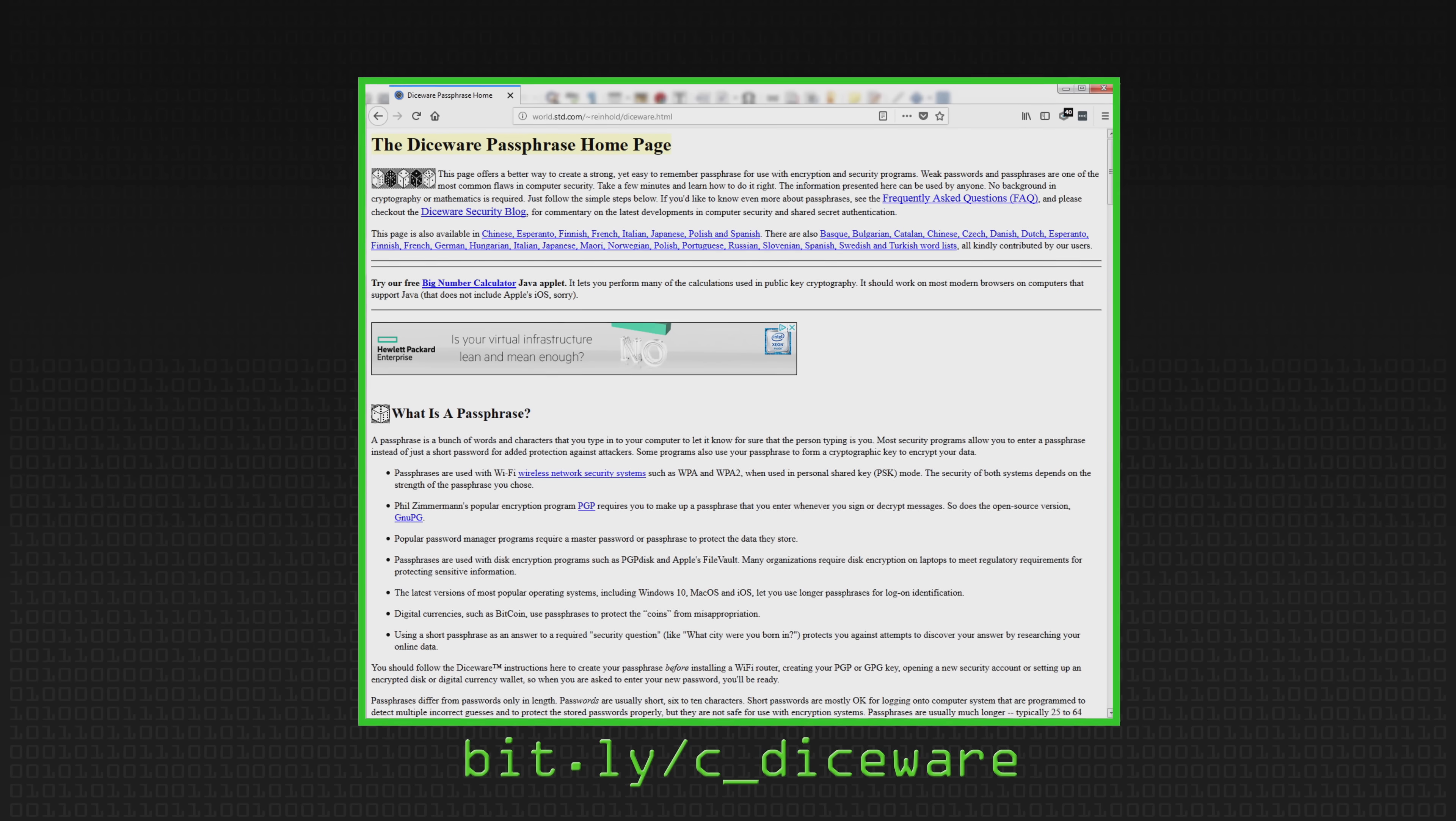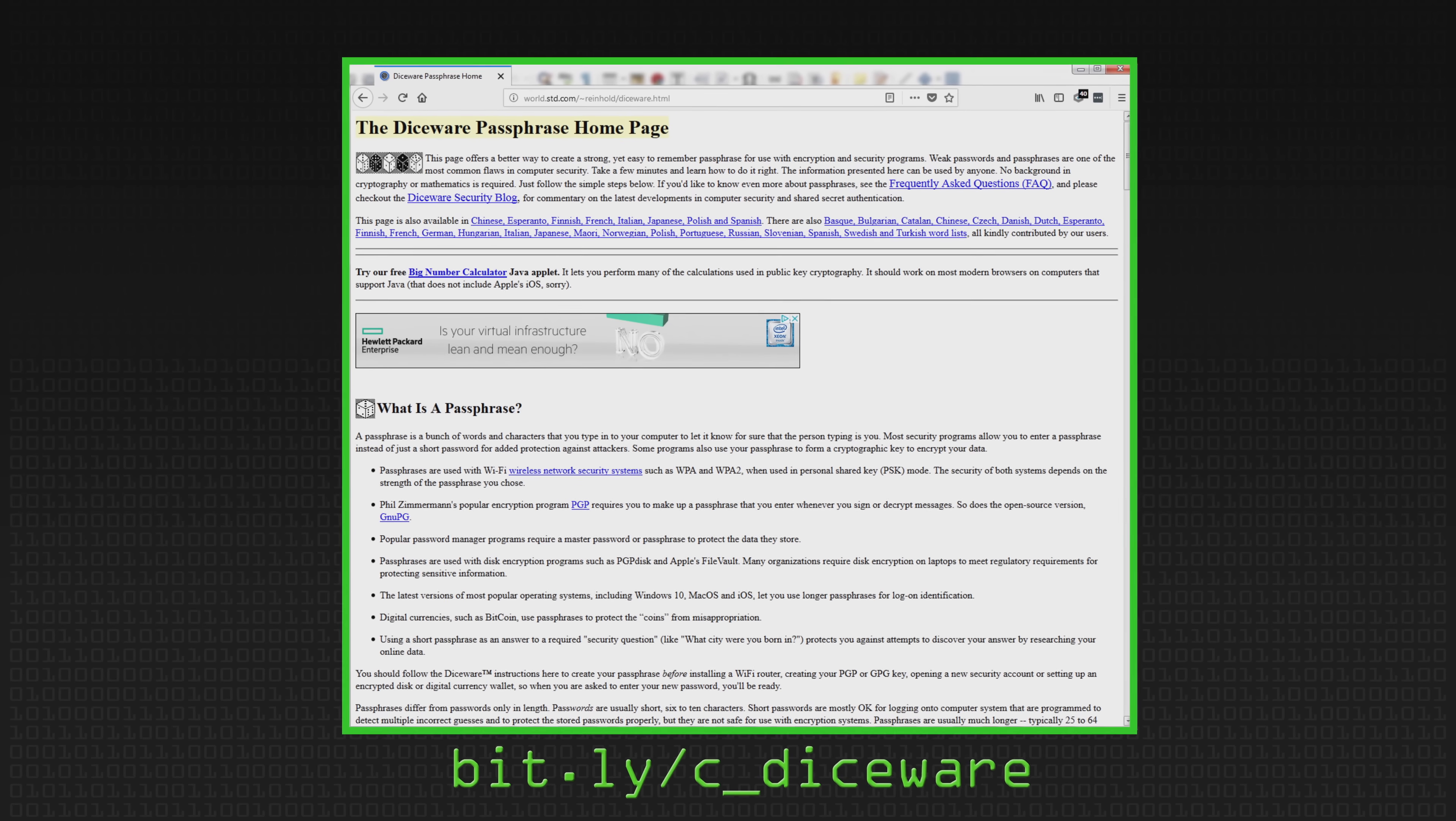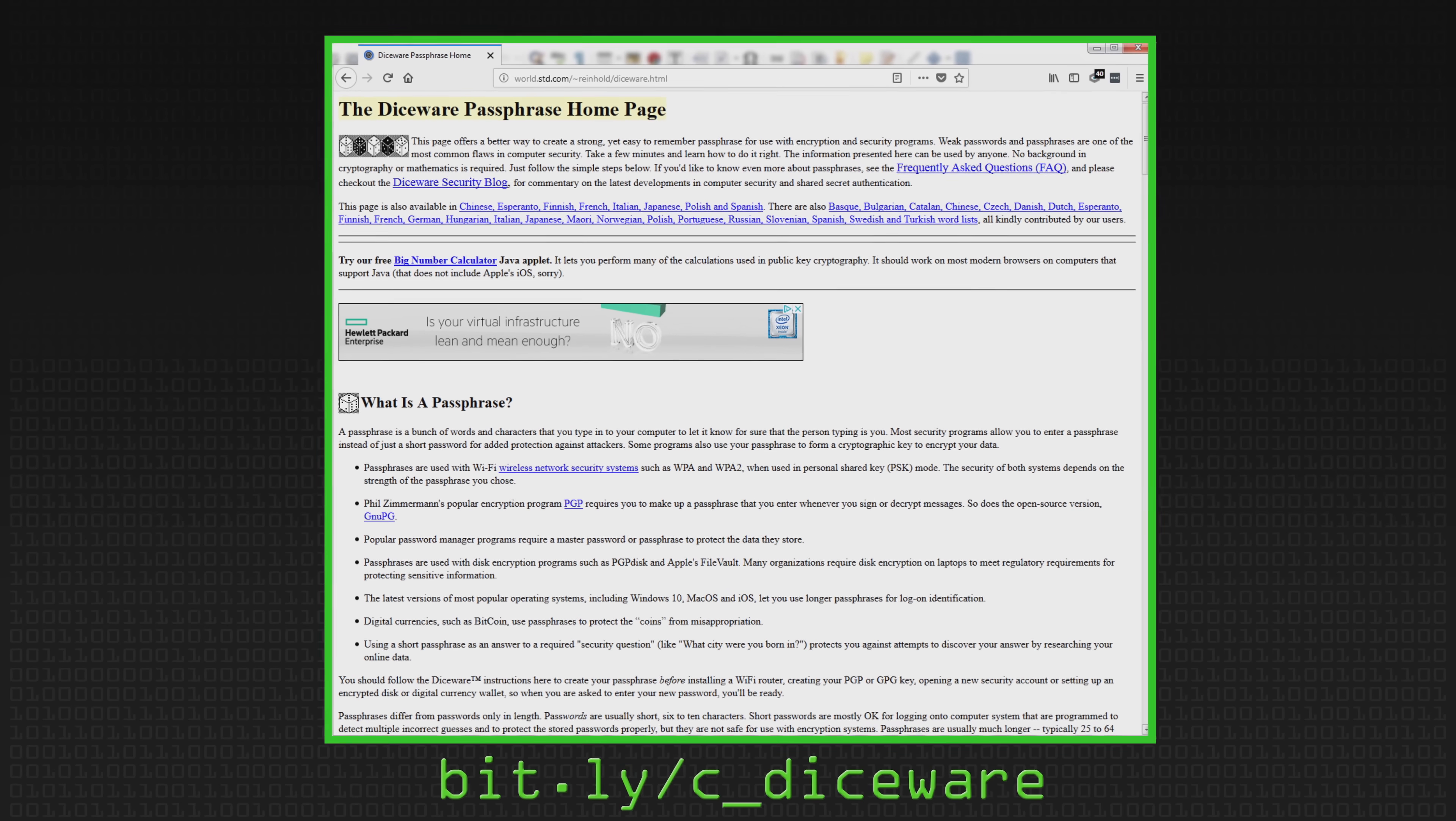So what Diceware does, the website was established in 1995 by a guy called Arnold Reinhold from the United States. What it is is a way of using dice to ensure that the words you're picking are actually random rather than just what you think is random. And that way we have a very nicely defined mathematical difficulty for brute-forcing that password.